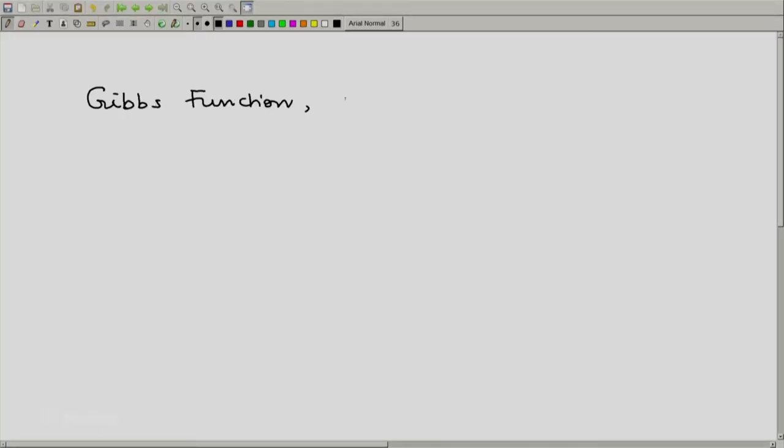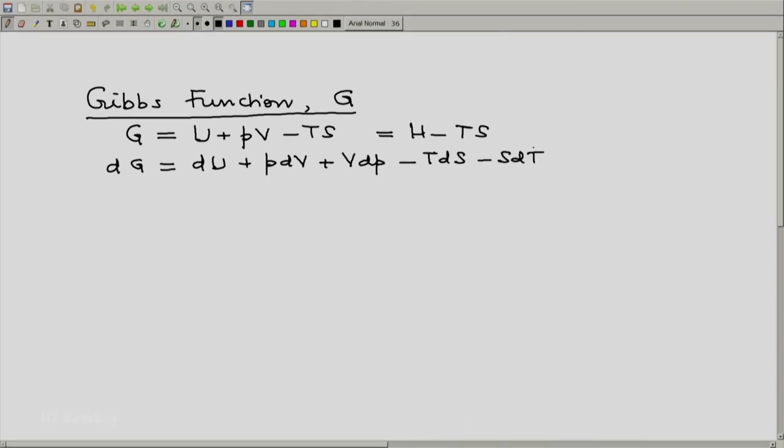Now let us move to the Gibbs function. The definition of the Gibbs function is U plus PV minus TS, which is also H minus TS. Let us look at the first direct definition. Expand it, you will get dG equal to dU plus PDV plus VdP minus TdS minus SdT. Now let us expand dU using the first law. That will be dQ minus dW plus PDV plus VdP minus TdS minus SdT.